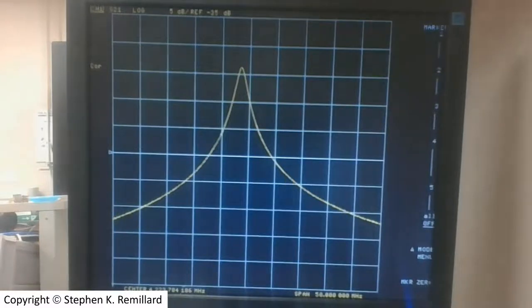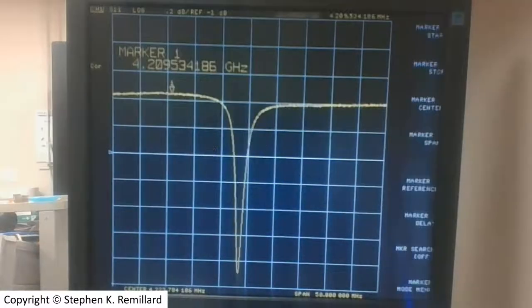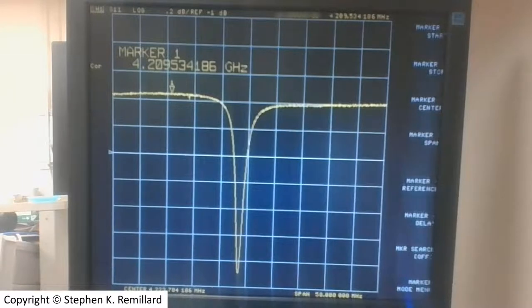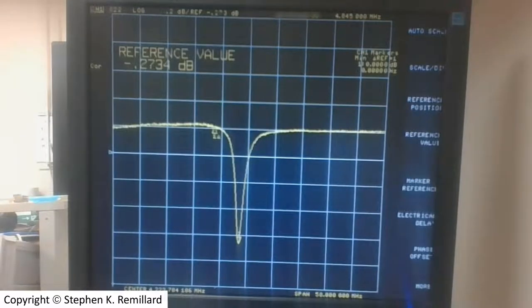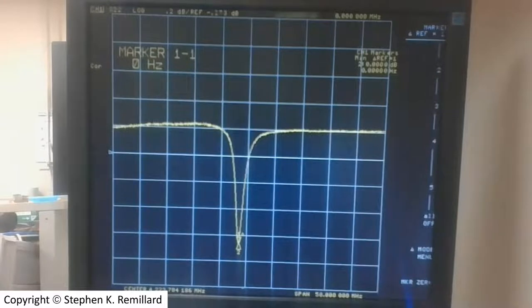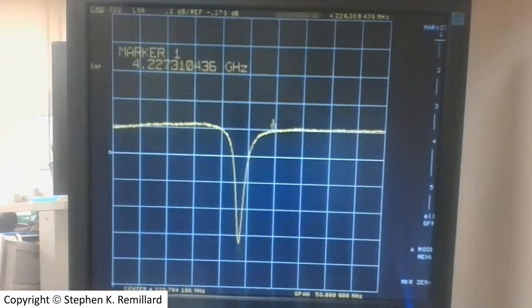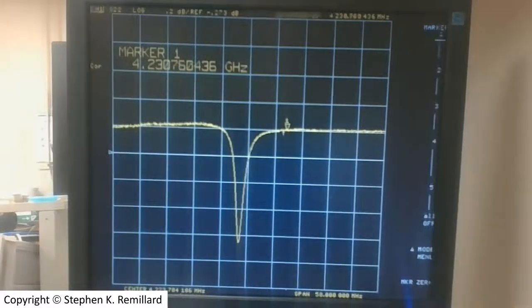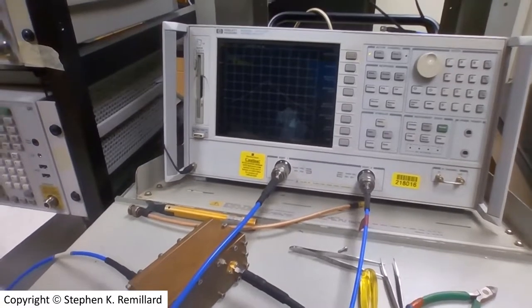With a calibrated network analyzer we will measure the S21, S11, and S22. We will capture that data on the floppy and take it over to Excel and analyze it. We're going to calculate the dissipated power two ways and compare them and see how well they match up.